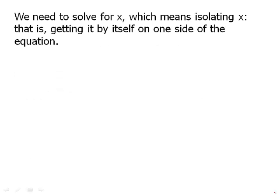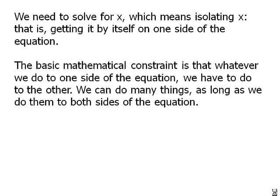We need to solve for x, which means isolating x, that is, getting it by itself on one side of the equation. The basic mathematical constraint is that whatever we do to one side of the equation, we have to do to the other.